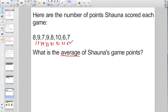How many numbers did I add? I added 1, 2, 3, 4, 5, 6, 7, 8. So I have a total of 64 points. She scored 64 points in 8 total games. So I'm going to divide 64 by 8. And that's going to give us an average of 8 points a game.